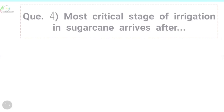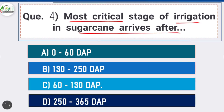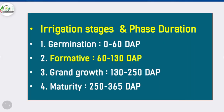Question 4: Most critical stage of irrigation in sugarcane arrives after — option C is correct: 60 to 130 days after planting. Formative stage is the most critical stage. Here is a list of irrigation stages: germination phase 0–60 DAP; formative phase 60–130 DAP (maximum water requirement); grand growth phase 130–250 DAP; maturity phase 250–365 DAP.